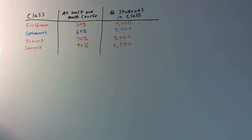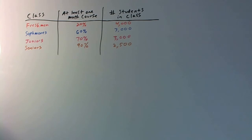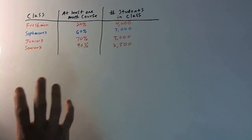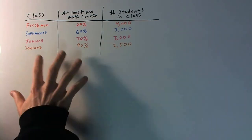Let's do a problem on some simple probability. Consider the following: suppose that 20% of the freshmen at your local high school or college — just insert school here — have taken at least one math course, as have 60%, 70%, and 90% of the sophomores, juniors, and seniors respectively. So that's right here.